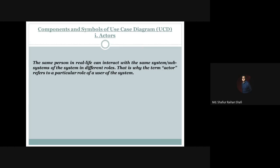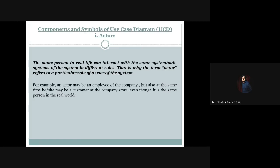For example, an actor may be an employee of the company, but at the same time he or she may be a customer at the company store, even though it is the same person in the real world. Similarly, in a university, a professor can be an instructor actor and also a researcher actor at the same time. The same person in real life can act as a different actor in terms of an information system.